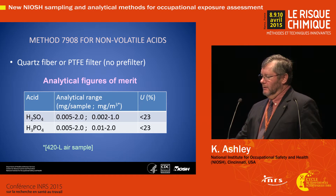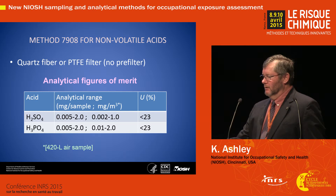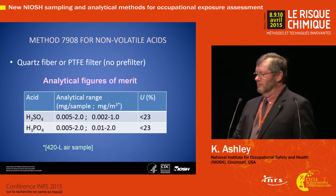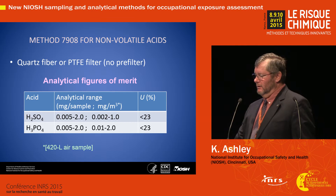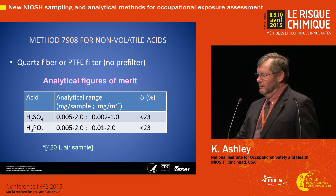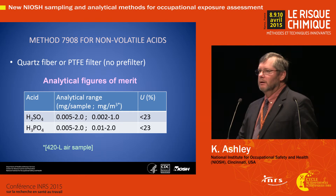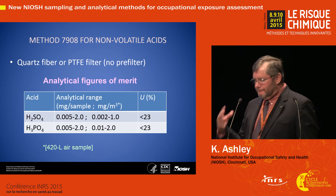For the non-volatile acids — sulfuric and phosphoric — there's no pre-filter. We're just collecting on a quartz fiber or PTFE filter. Good analytical performance is achieved over analytical ranges that are again relevant to industrial hygiene applications.